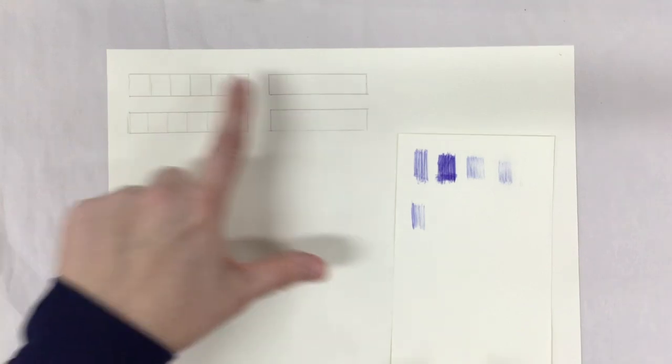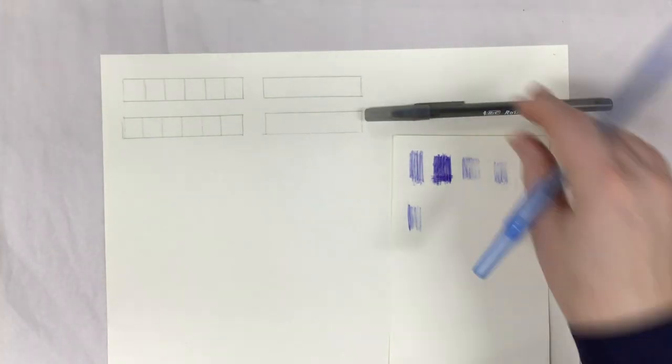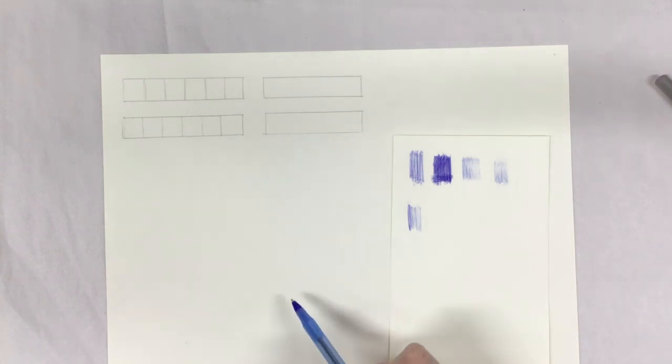So you're supposed to do a tonal scale and a gradation scale. I have one for each color of pen so that you can decide if you want to do blue or if you want to do black.